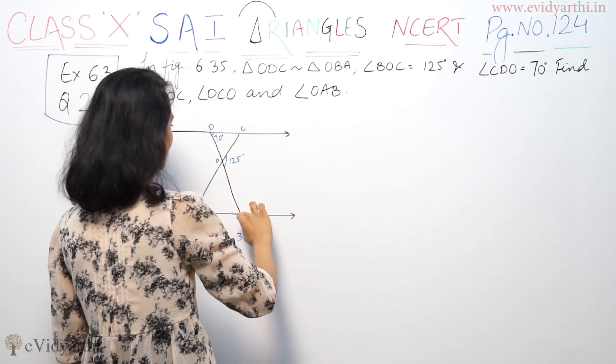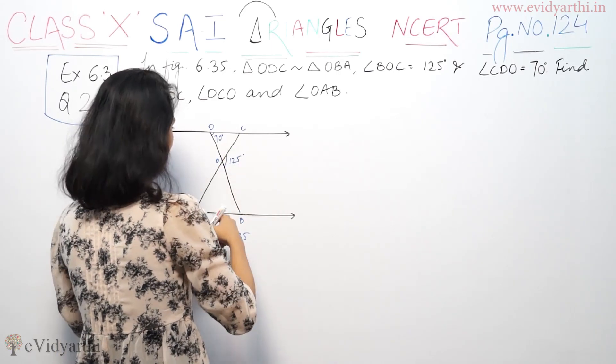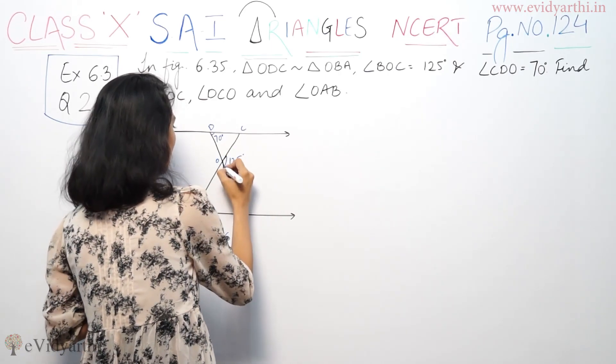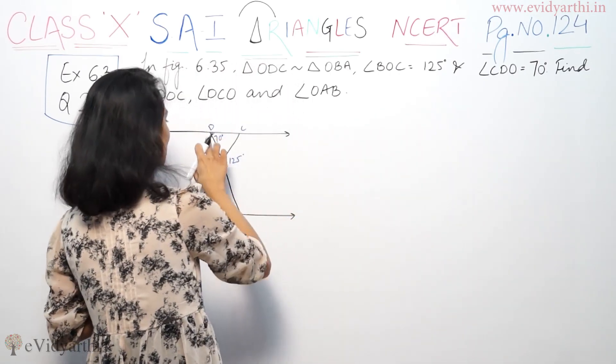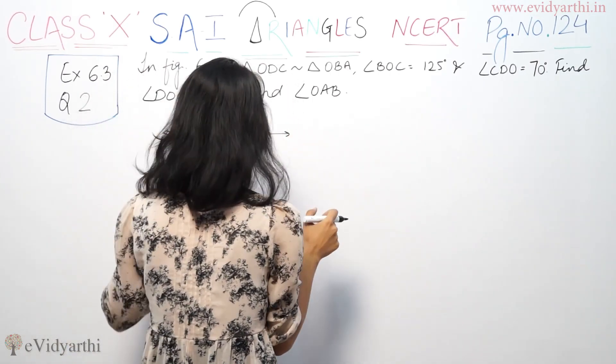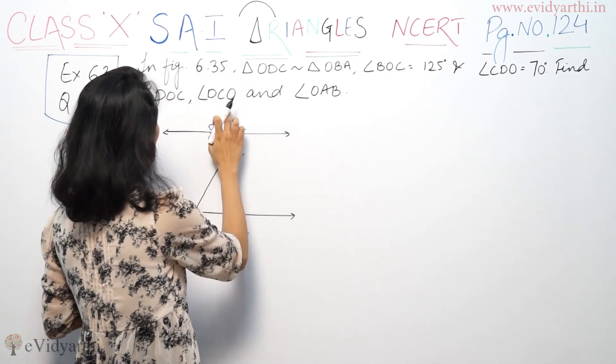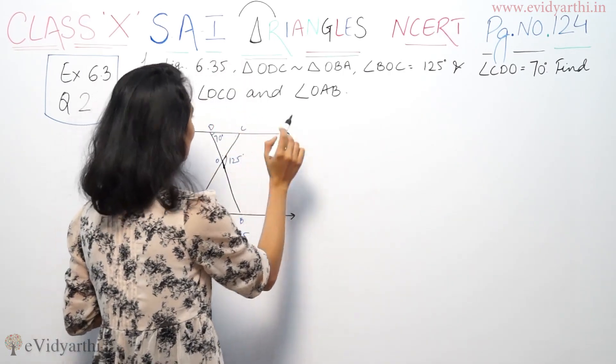Angle BOC, this is BOC. This angle is basically 125. CDO, CDO is 70. Find BOC and BCO, OAB.